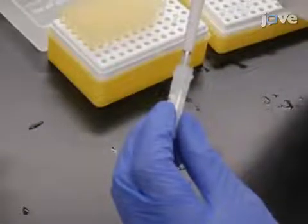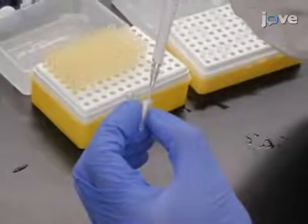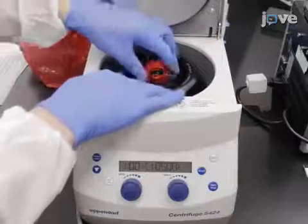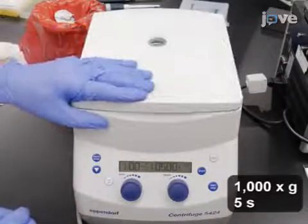Next, add 2.5 microliters of fragmentation mix from the kit and mix the tube gently using inversions. Then, use a pulse of centrifugation to spin down the tube's contents.